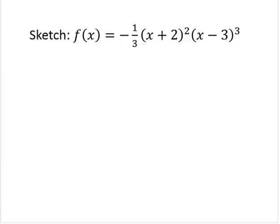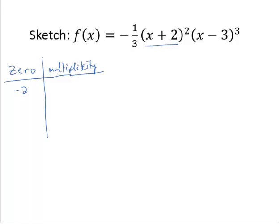Since I see a factor of x plus 2, I know that I have a zero at negative 2. And then its multiplicity, being raised to the second power, is 2.